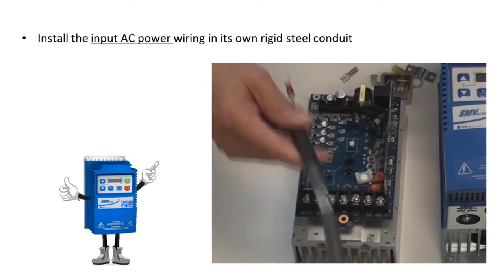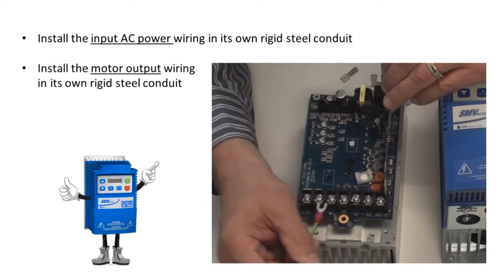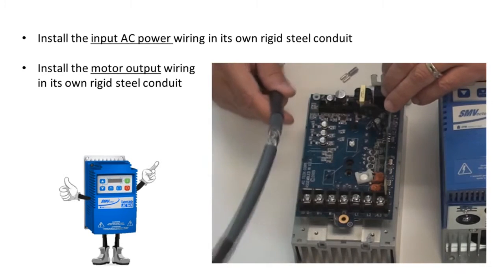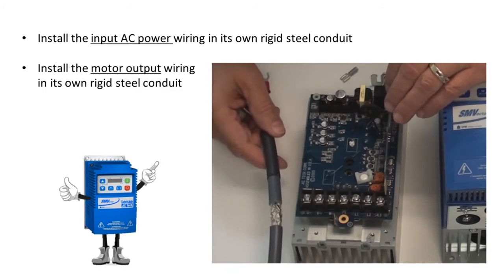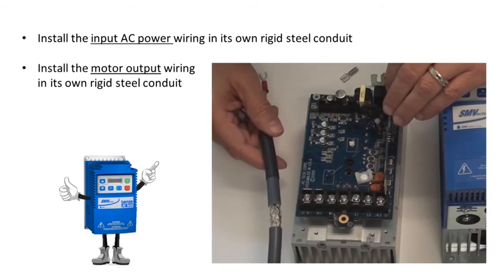So by connecting the motor power wires to these screws, they would go in their own separate conduit. And likewise, our input power wiring would go in its own rigid steel conduit.